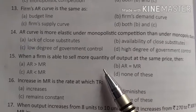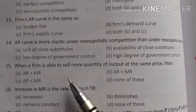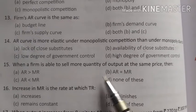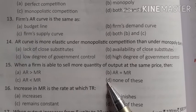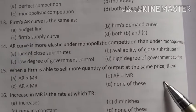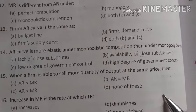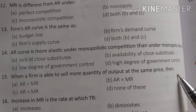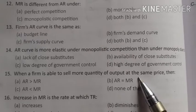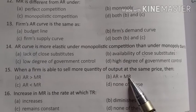When a firm is able to sell more quantity of output at the same price — as in perfect competition — then AR equals MR. In perfect competition, price is set by the industry and firms sell unlimited quantity at that price, so AR equals MR.